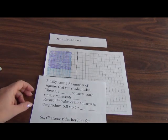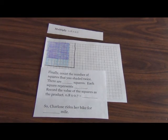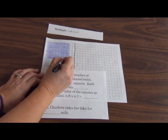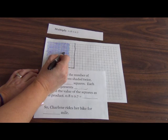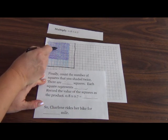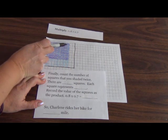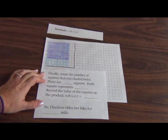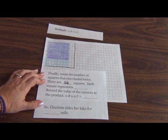Now we get to the really fun part. Finally, we're going to count the number of squares that we shaded twice. Let's do that: 1, 2, 3, 4, 5, 6, 7, 8, 9, 10, 11, 12, 13, 14, 15, 16, 17, 18, 19, 20, 21, 22, 23, 24, 25, 26, 27, 28, 29, 30, 31, 32, 33, 34, 35, 36, 37, 38, 39, 40, 41, 42, 43, 44, 45, 46, 47, 48, 49, 50, 51, 52, 53, 54, 55, 56. There are 56 squares.